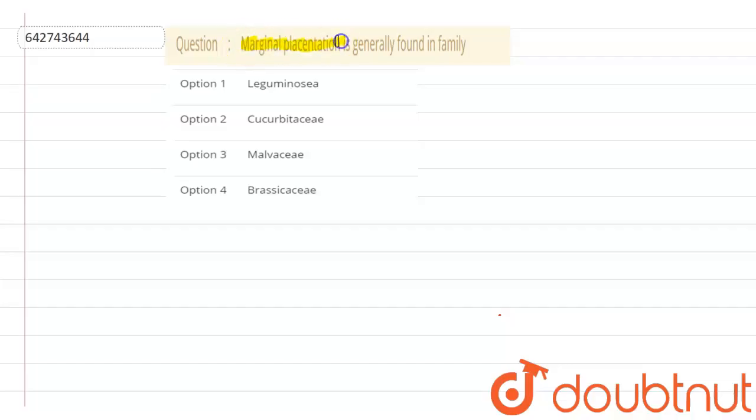marginal placentation is generally found in family, and these are the options given: Leguminose, Cucurbitese, Malvise, and Brasekse. Now let's proceed to the solution.